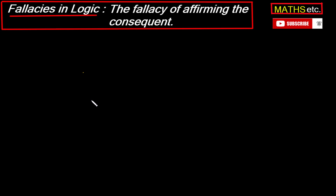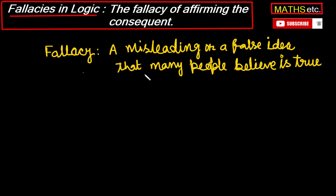Hi. Fallacy — the word dictionary meaning is misleading or false idea. It is a false idea that many people think is true. Fallacy is a misleading or false idea that many people believe is true.